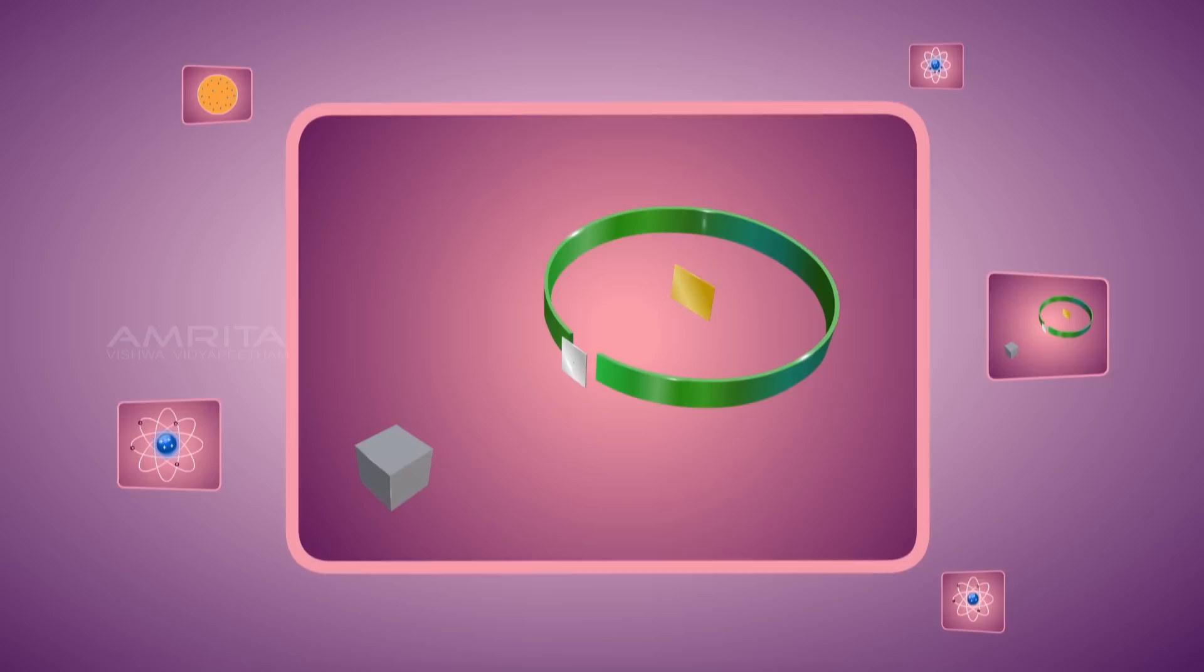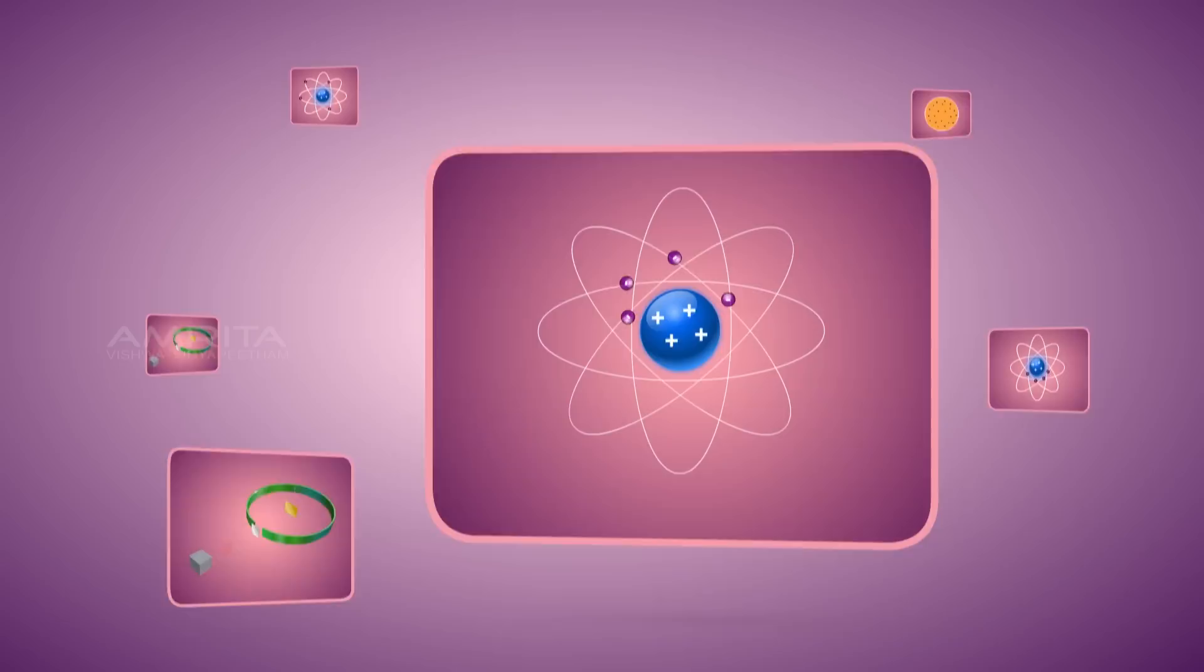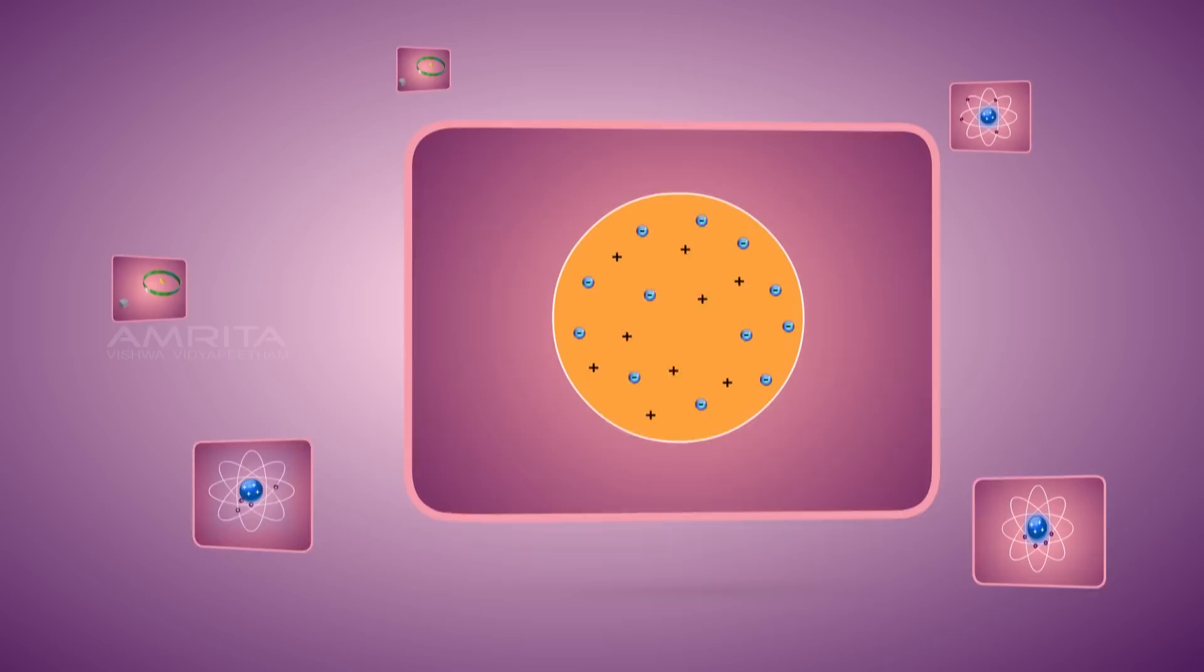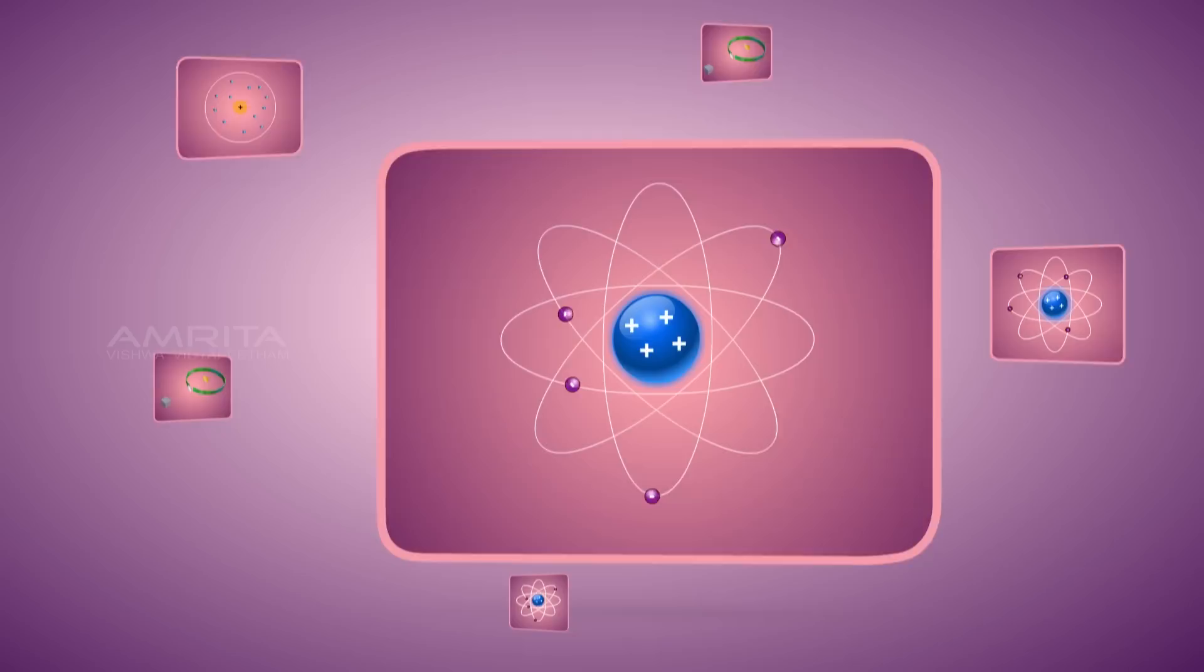In 1909, Ernest Rutherford conducted an experiment called the alpha particle scattering experiment. The passage of alpha particles through the gold foil was observed for analysis. The positively charged center in an atom is called the nucleus. All the mass of an atom is concentrated in the nucleus. Electrons revolve around the nucleus in well-defined orbits. The size of the nucleus is very small as compared to the size of the atom.